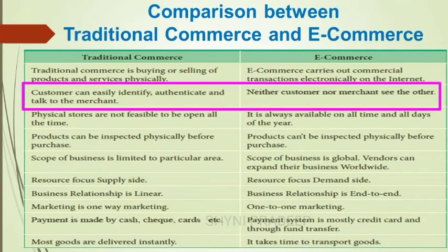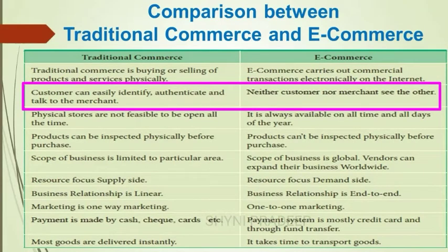In traditional commerce, a customer can easily identify, authenticate, and talk to the merchant. Whereas in e-commerce, neither the customer nor the merchant can see the other, so the customer cannot easily identify or authenticate the merchant.